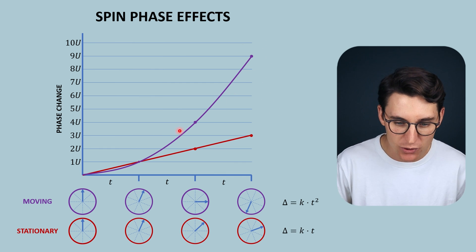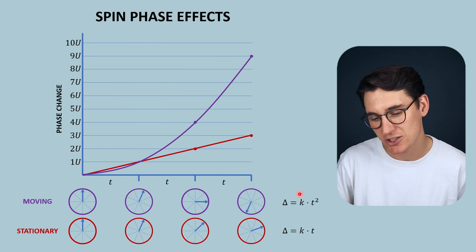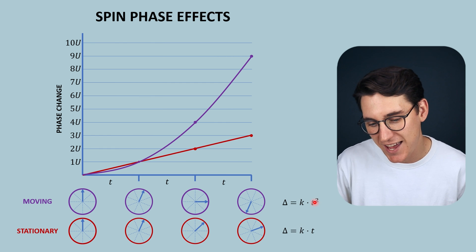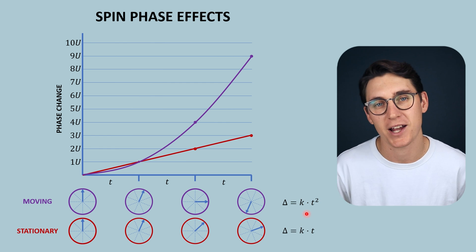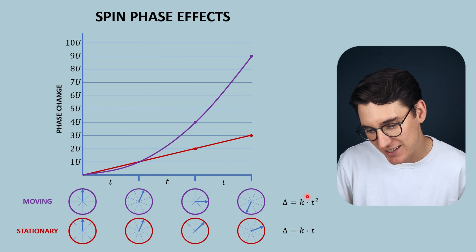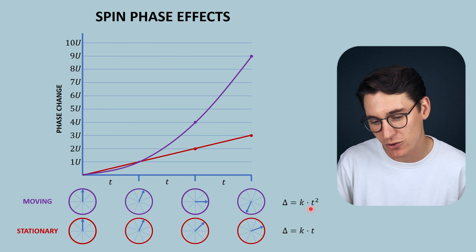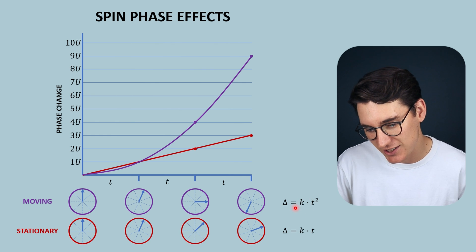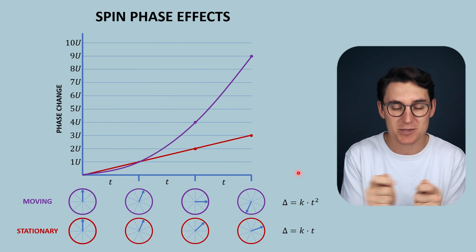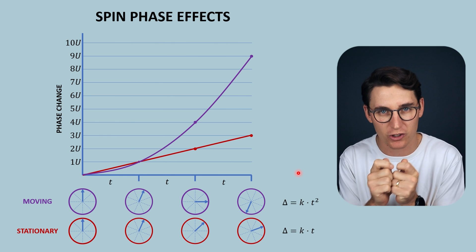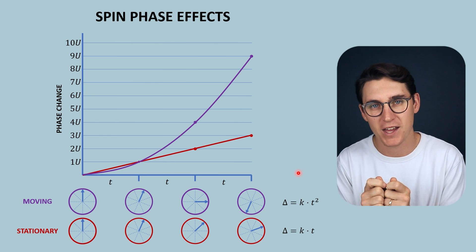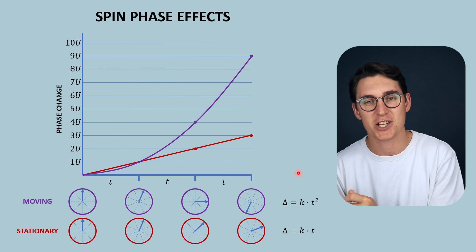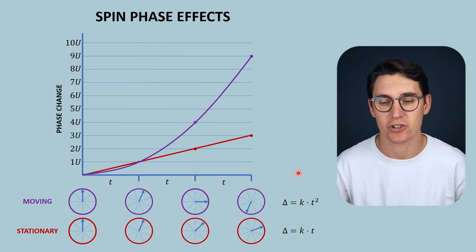The degree of phase change in a moving spin is represented by a formula where phase change is a product of a constant and the amount of time that we're applying the gradient, and the amount of time leads to exponential changes in phase. This constant is a product of how fast that spin is moving through the gradient, as well as how strong that gradient is — the stronger the gradient, the more phase change we'll get as that spin moves across it.